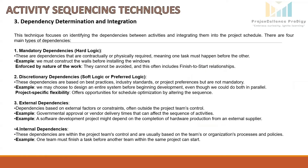Next is Dependency Determination and Integration. This technique focuses on identifying the dependencies between activities and integrating them into the project schedule. There are four main types. The first is mandatory dependencies, also called hard logic — these are inherent in the nature of the work and represent activities that must be done in a specific order due to physical or technical constraints, such as constructing walls before installing windows. These cannot be avoided and often include a Finish to Start relationship.